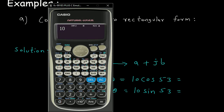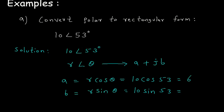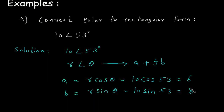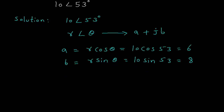10 cos 53 is 6, and 10 sin 53 is 7.98, which is approximately equal to 8. So A plus jB equals 6 plus j8. Therefore, 10 at an angle of 53 degrees in polar form is equal to 6 plus j8 in rectangular form.